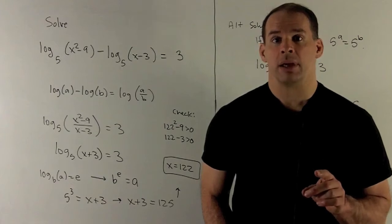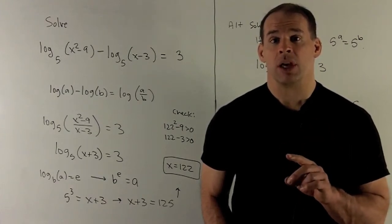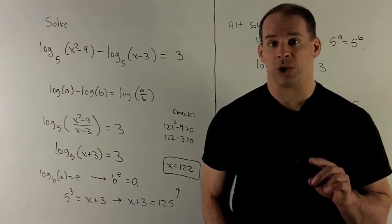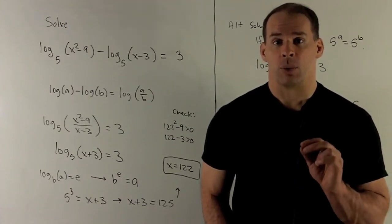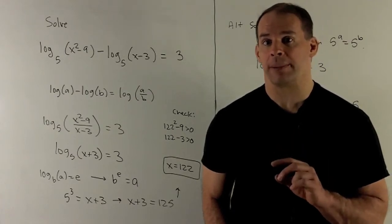First step, I want to combine the two logs. Since I have a difference, we can rewrite that as a quotient on the inside. So we'll have log base 5 of x squared minus 9 divided by x minus 3.